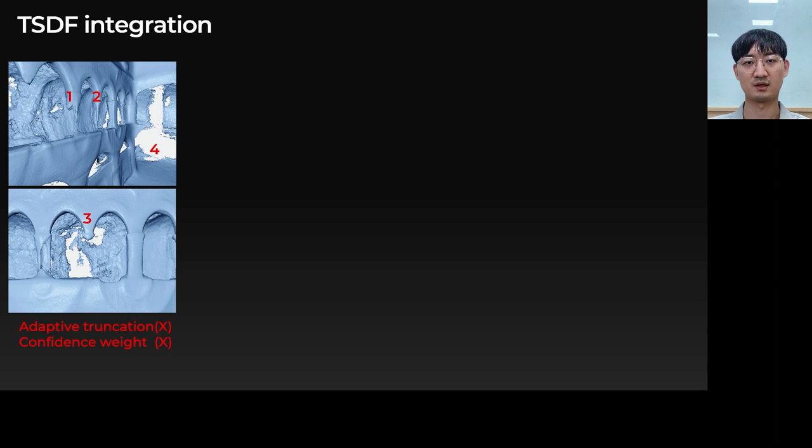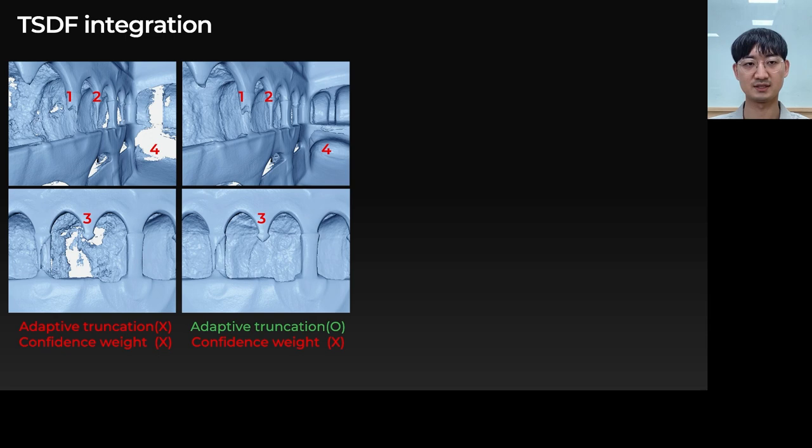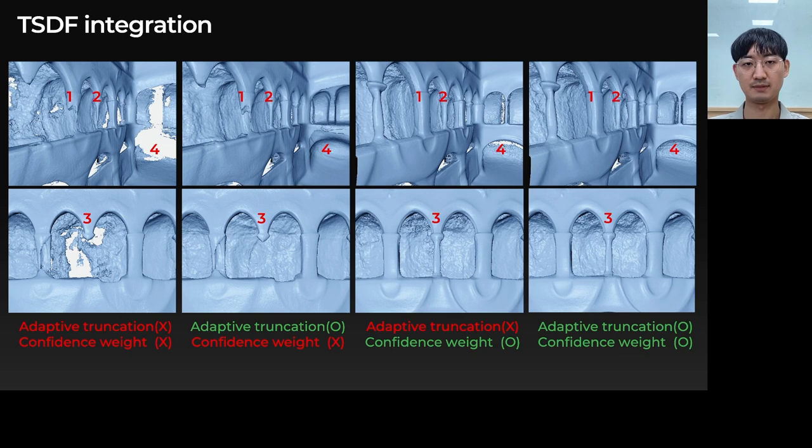This is a result with a constant truncation threshold and without confidence weight. TSDF fusion reconstructs pillars incompletely. When we use a depth-dependent truncation threshold, far surfaces are reconstructed better. It reconstructs pillars more accurately when we use depth-dependent Gaussian weight and confidence weight by checking depth and color consistency with neighbor frames.